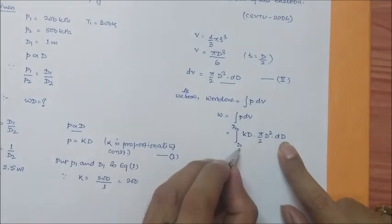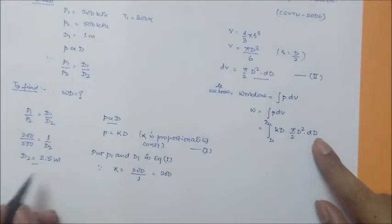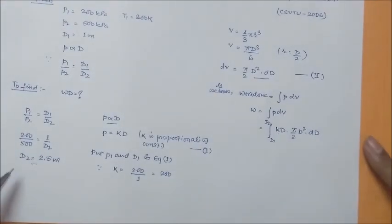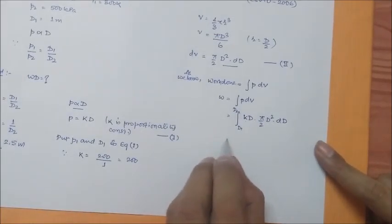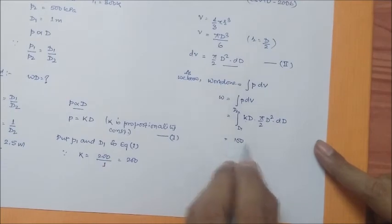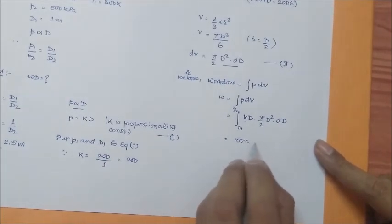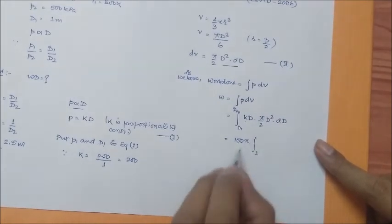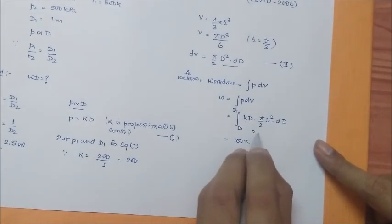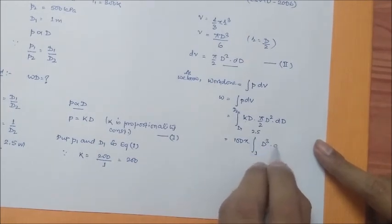D₁ was given in the question and D₂ we have calculated. So we have this integral, lower limit as 1 and upper limit as 2.5, D³ dD.